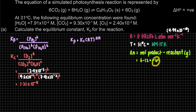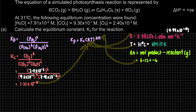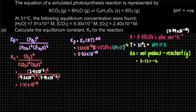Remember, for delta N it must be (RT) raised to the power of delta N — it is both R multiplied by T raised to the power of negative 6, not just R or just T alone. Once you substitute all values — Kc, R, T, and delta N — the answer is Kp = 5.02×10⁻¹⁸.